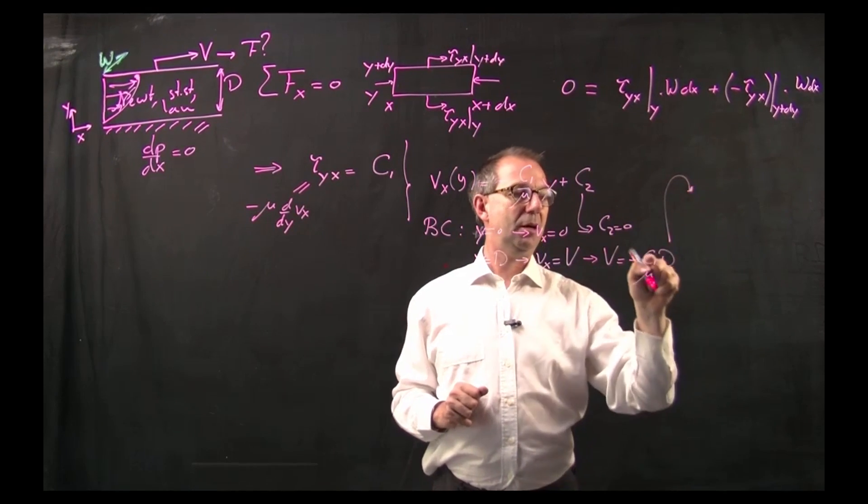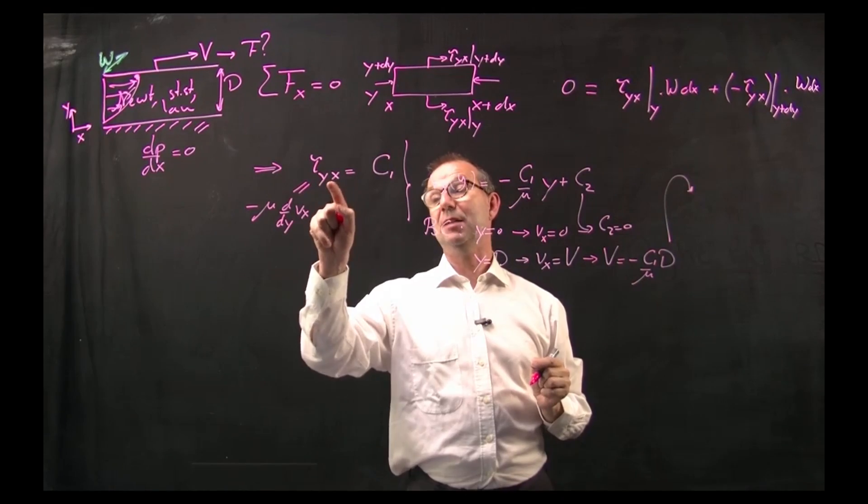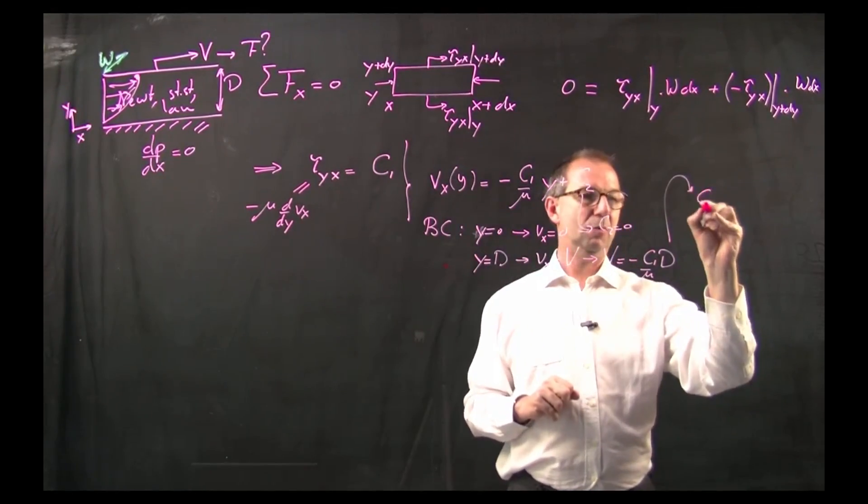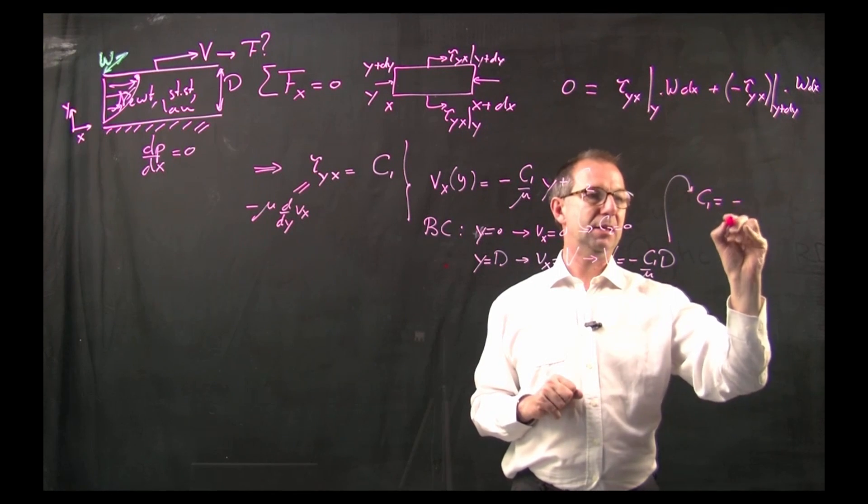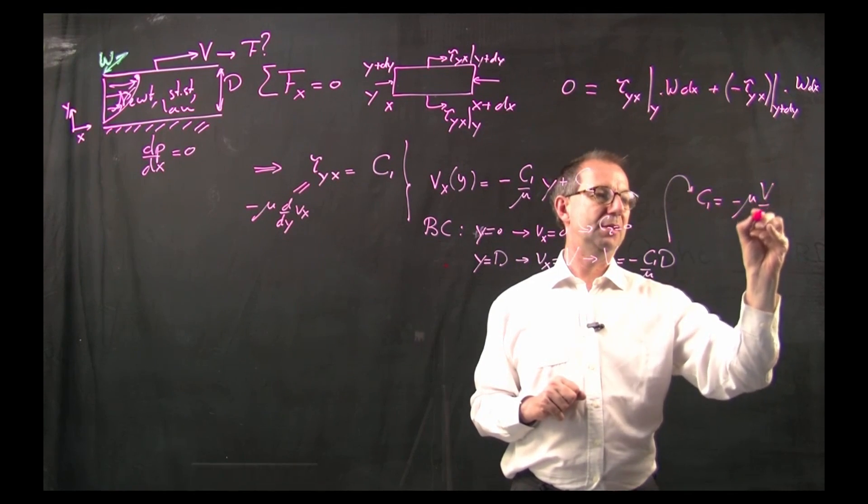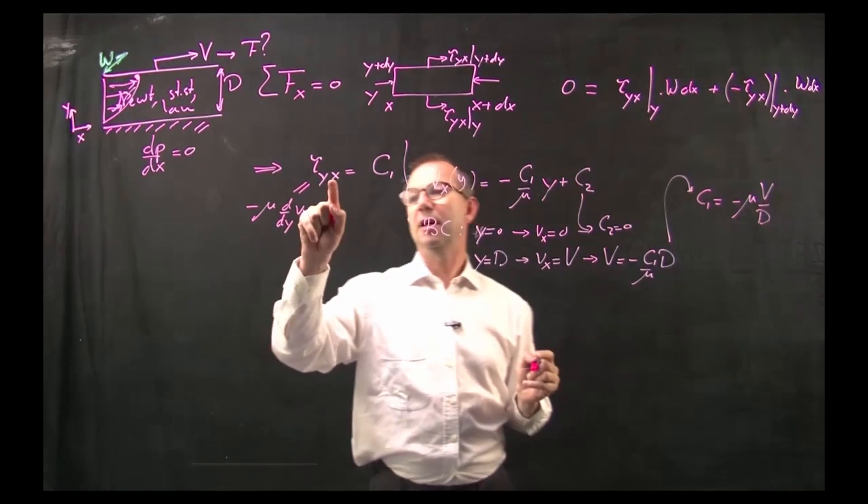Out of which I compute c1 because that's what I need for forcing. So c1 equals minus mu v over d and thus I have tau.